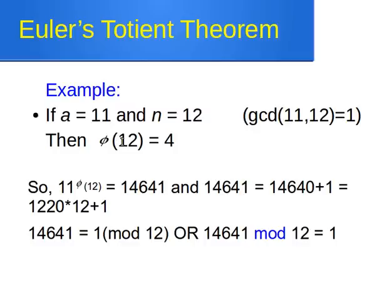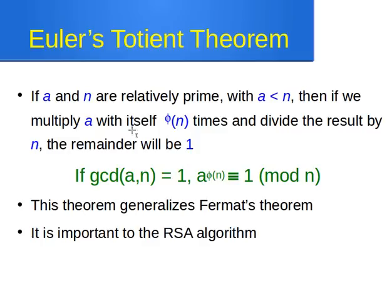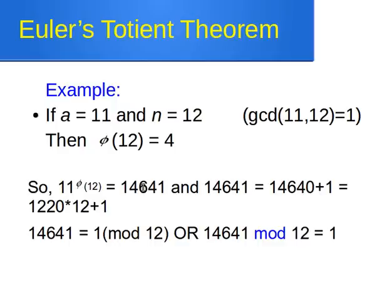We raise 11 to the power of phi of 12, which is 4. So 11 multiplied by itself four times is 14,641. Notice that 14,641 = 14,640 + 1, and 14,640 is divisible by 12 — specifically 12 × 1,220 = 14,640. That means if we divide 14,641 by 12, the remainder is exactly 1.